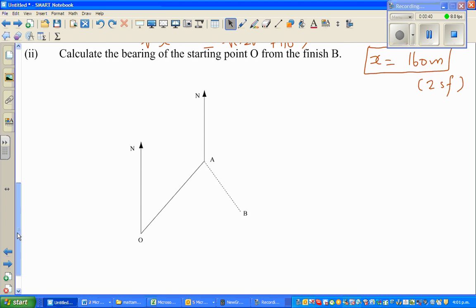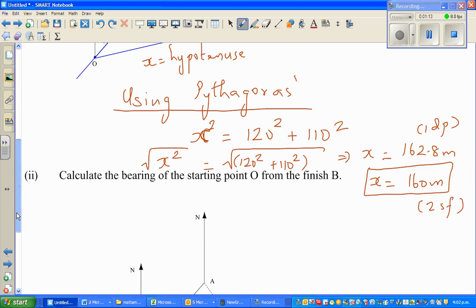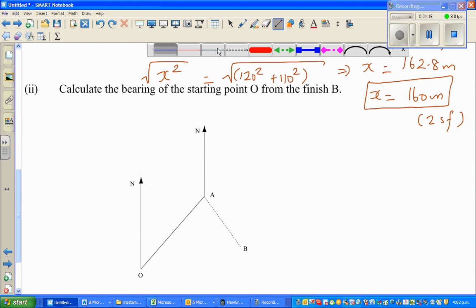Now the next part is calculate the bearing of the starting point from B. As I discussed in the last video, whenever you have bearing, you write bearing, not bearings. Bearing is always from north and clockwise from north. So whenever you have bearing you always have to draw a north and you go clockwise from the north.